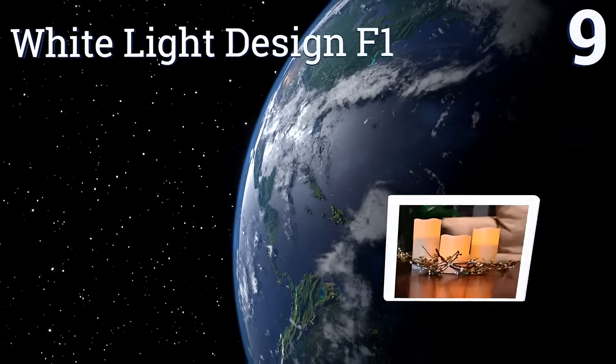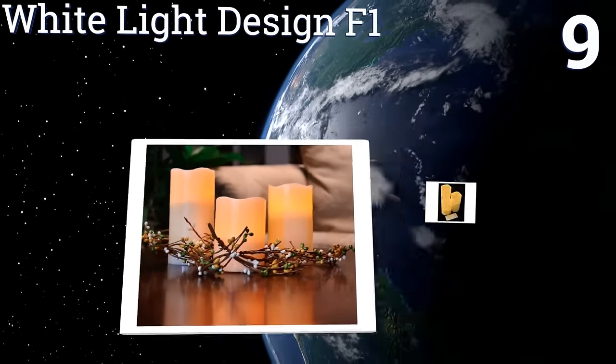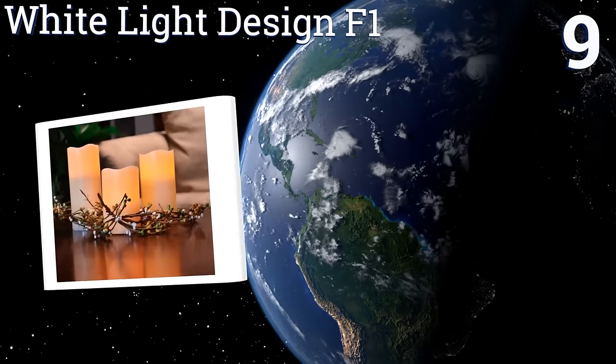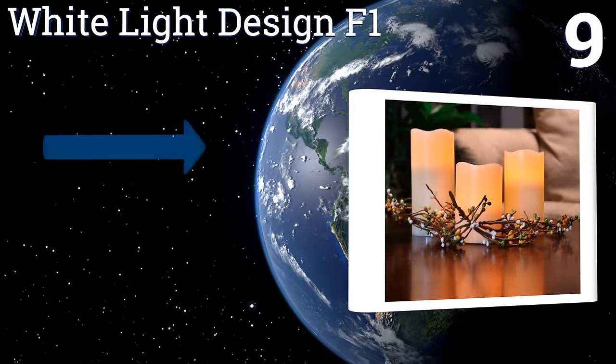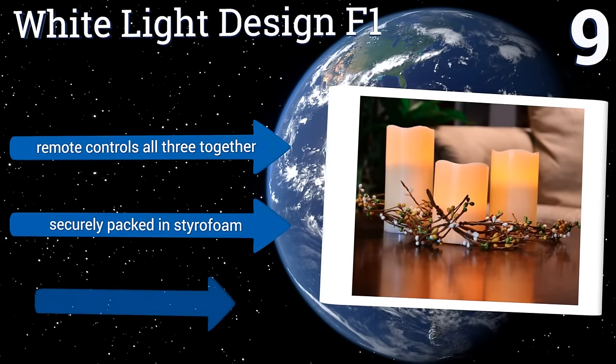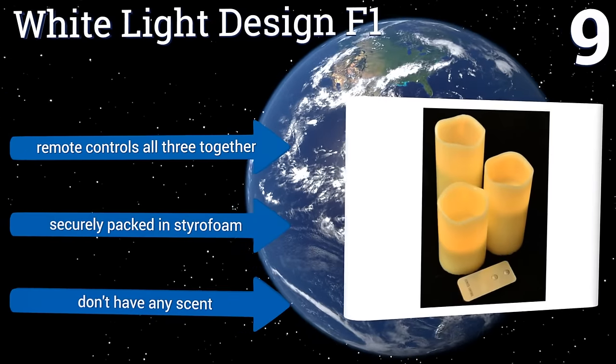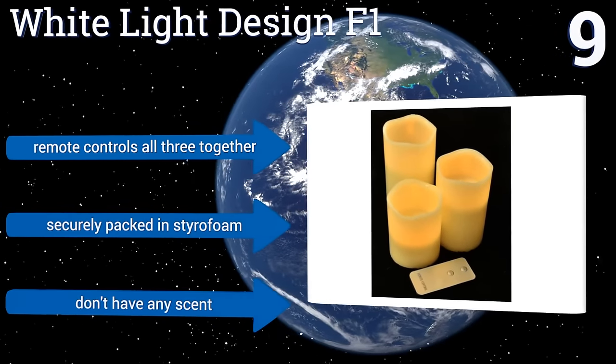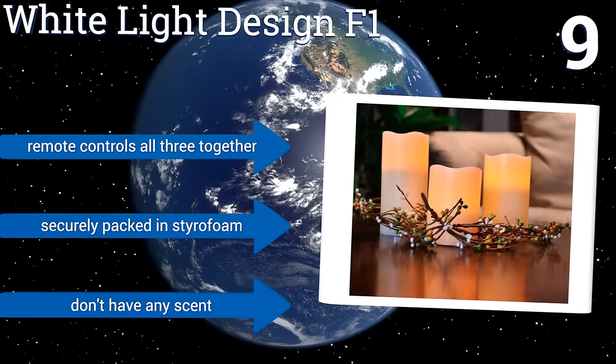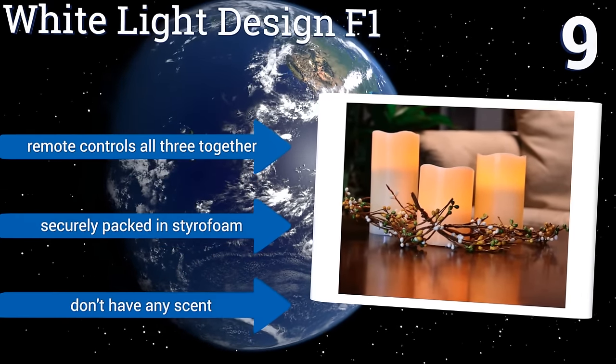At number 9, the White Light Design F1 features 3 ivory pillars that give off a golden amber colour, perfect for dining room table centrepieces or a holiday display. They're also backed by a 100% satisfaction guarantee in case you don't like them for any reason. The included remote controls all three together and they arrive securely packed in styrofoam, but they don't have any scent which may be good or bad depending on your preference.